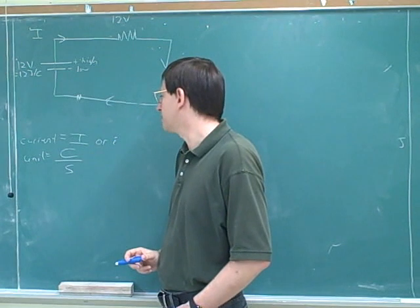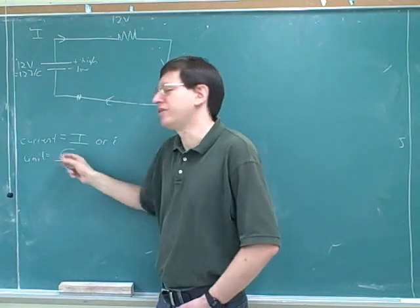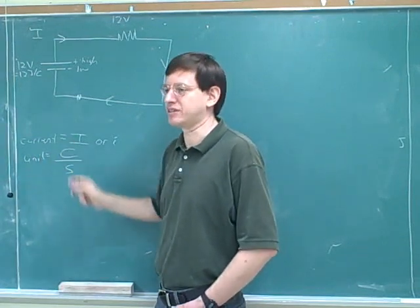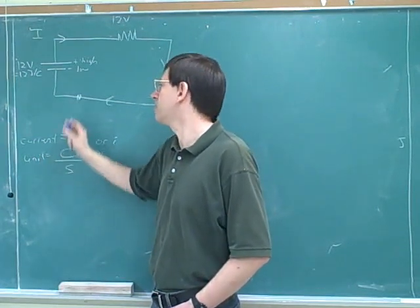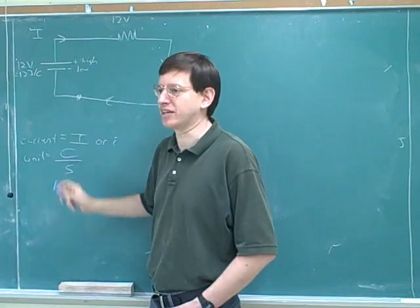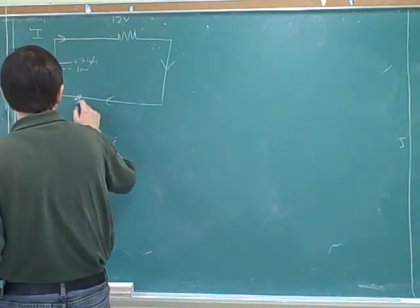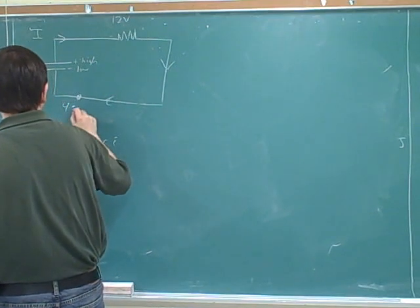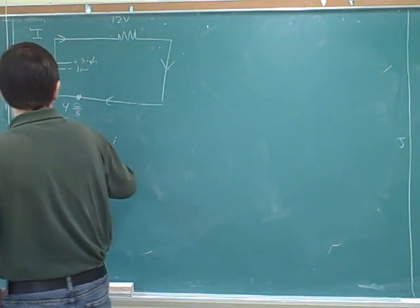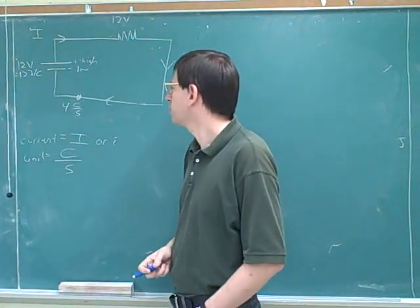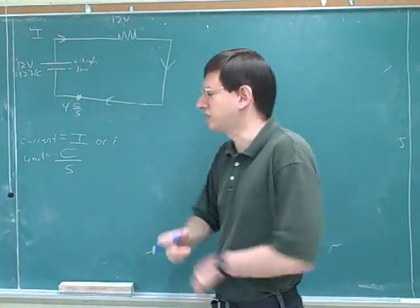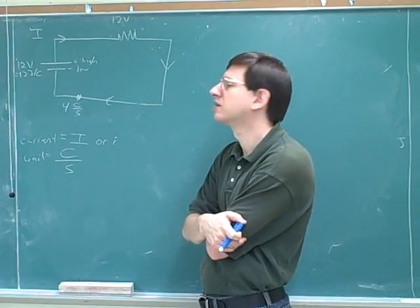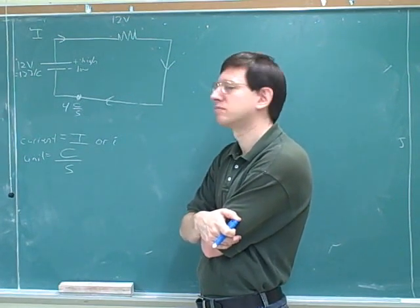So if you understand what current means, that should help you remember the units, and it works vice versa too. If you remember the units for current, that should remind you what current means — it tells us how many Coulombs are moving past a certain point per second. For example, suppose the current at this point is four Coulombs per second. How would we interpret that? In one second, four Coulombs will pass that point.